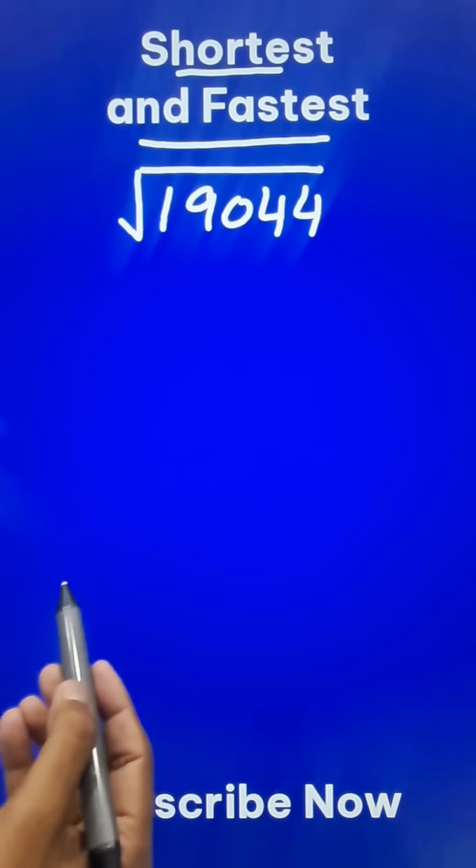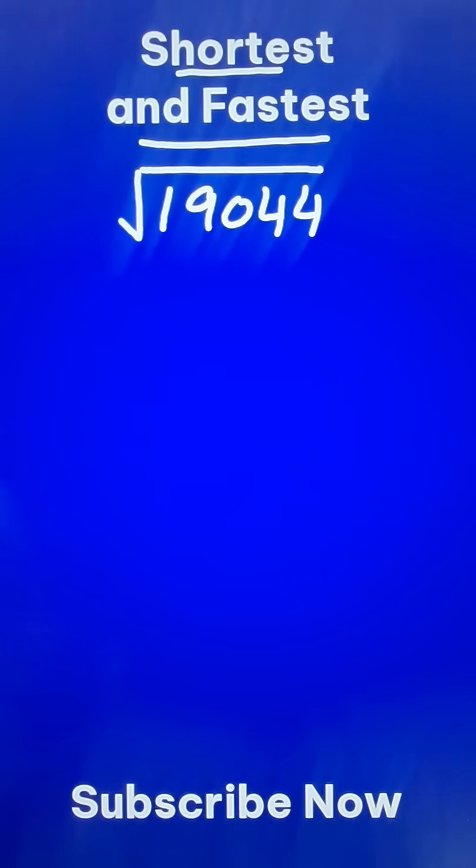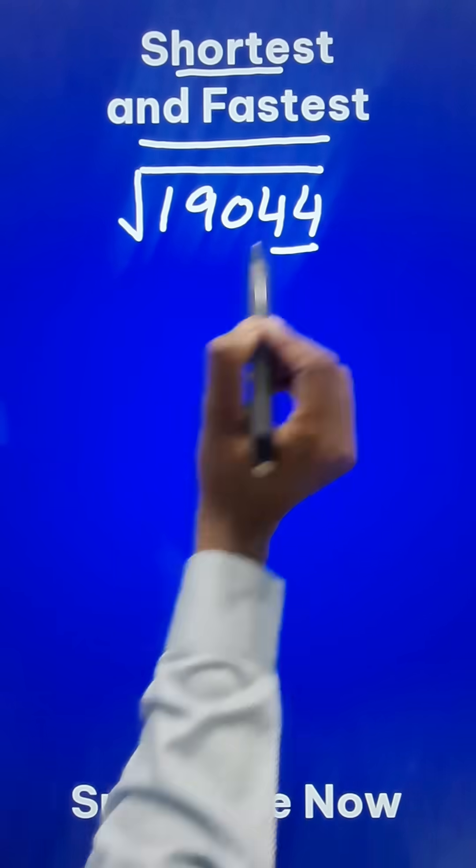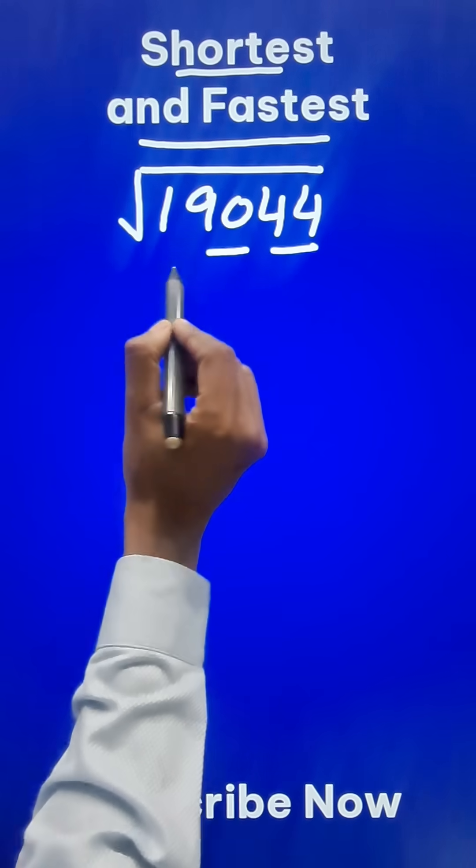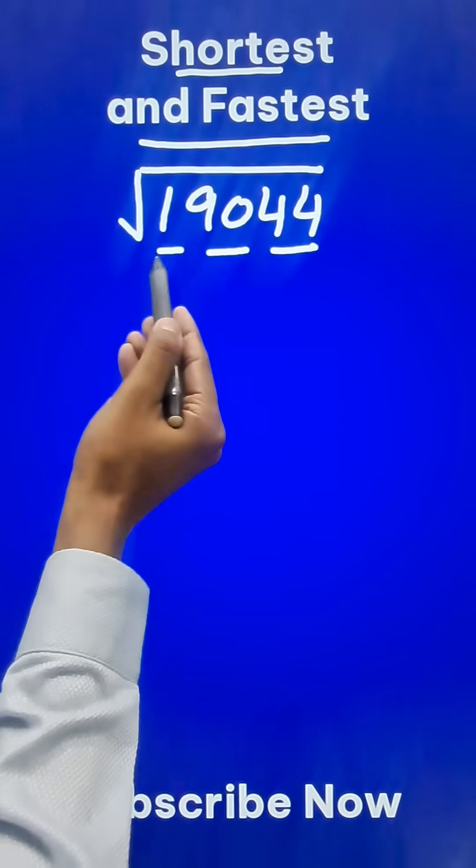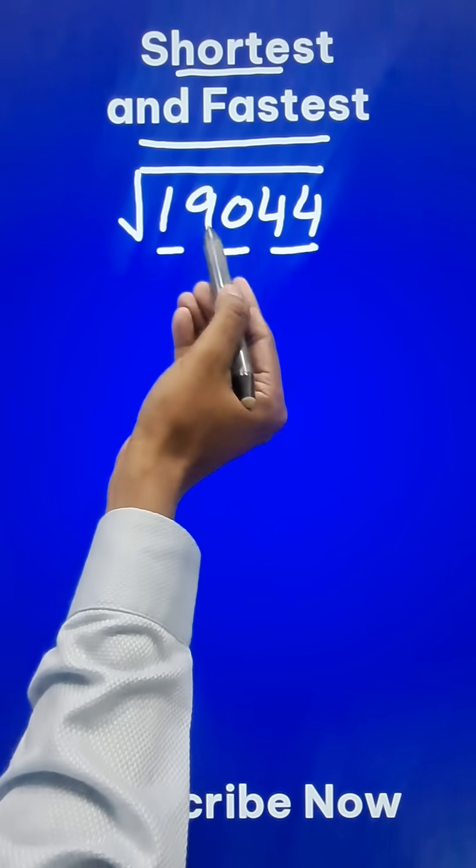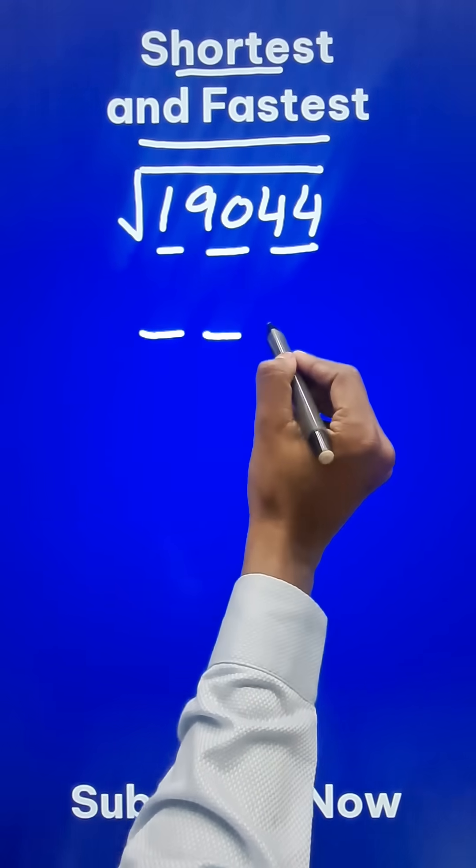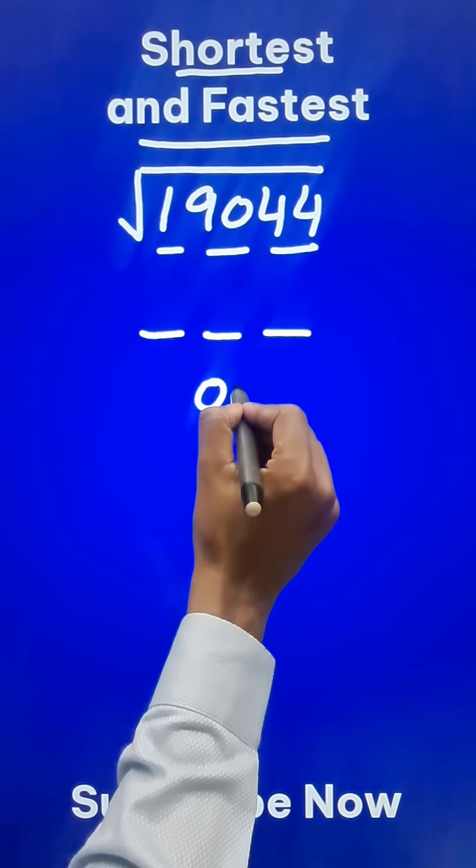It's a perfect square so the trick works for perfect square numbers only. Let's make pairs from the right hand side so 44, 90 and the 1 is left alone. So how many lines did I put? By pairing I put 3 lines so my answer is a 3 digit number. But there are two possibilities.